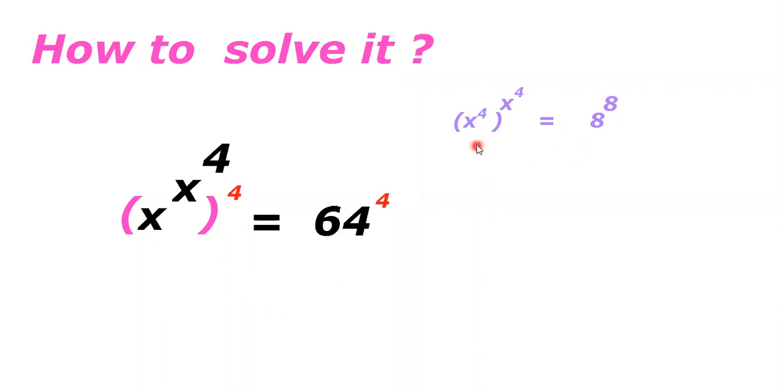x power 4 whole power x power 4 is equal to 8 power 8. So then x power 4 is equal to 8.